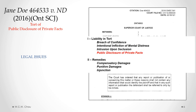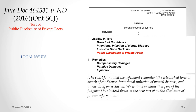The legal issues in this case were whether the defendant had committed any one or more of four different torts: breach of confidence, intentional infliction of mental distress, intrusion upon seclusion, and the new tort of public disclosure of private facts. If the defendant did commit any of these torts, the other issue would be the appropriate remedies in terms of compensatory damages, punitive damages, and an injunction. The court found that the defendant committed the established torts of breach of confidence, intentional infliction of mental distress, and intrusion upon seclusion, but the focus here is on the new tort of public disclosure of private facts.